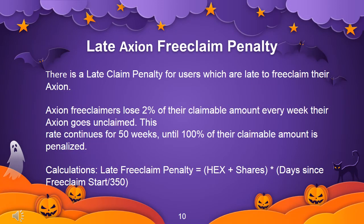Late AXION free claim penalty: there is a late claim penalty for users who are late to free claim their AXION. Free claimers lose 2% of their claimable amount every week their AXION goes unclaimed. This rate continues for 50 weeks, until 100% of their claimable amount is penalized. Calculation: late free claim penalty = HEX shares × (days since free claim start / 350).